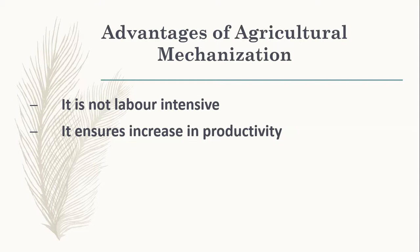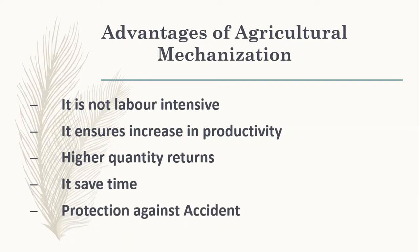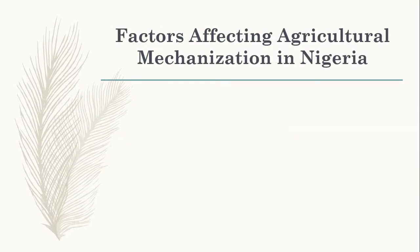Number two, it ensures an increase in productivity. With the help of agricultural mechanization, the wastage of food during cultivation, harvesting, preparation, and storage has been reduced, and the quantity is always increasing, yielding much more productivity than without mechanization. Number three, higher quality return. It also saves time and protects against accidents. These are some of the advantages of agricultural mechanization.